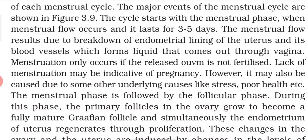The menstrual phase is followed by the Follicular Phase. During this phase, the primary follicle in the ovary grows to become the fully mature Graafian follicle, and simultaneously the endometrium of the uterus regenerates through proliferation. So two things happen: the primary follicles convert into Graafian follicles, and the endometrium starts to thicken.